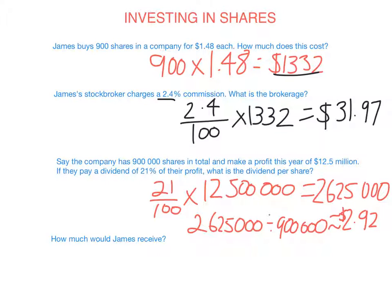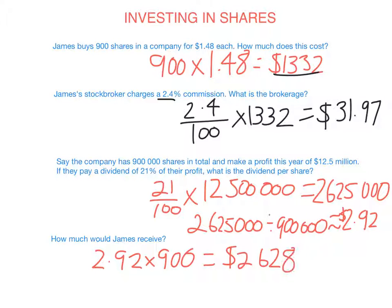So how much would James receive? He gets $2.92 per share, and as established, he owns 900 shares. So that equals $2,628. He will get $2,628 as pure profit — that's what he gets from the company after a year. And again, that's why people invest: to get dividends and make money.